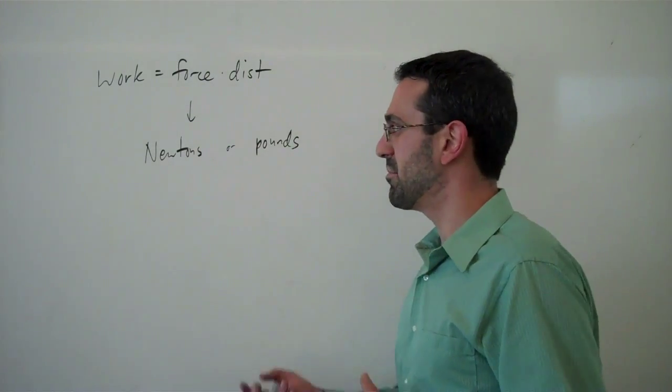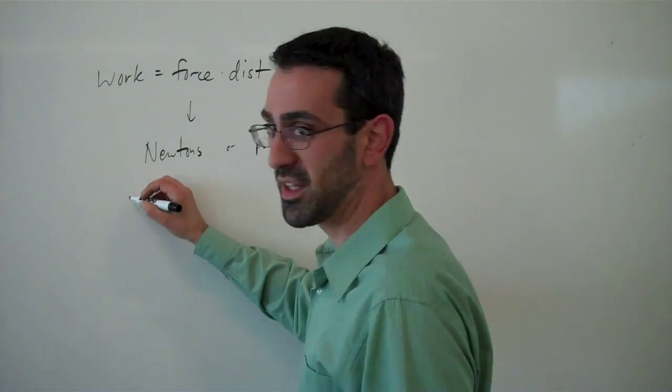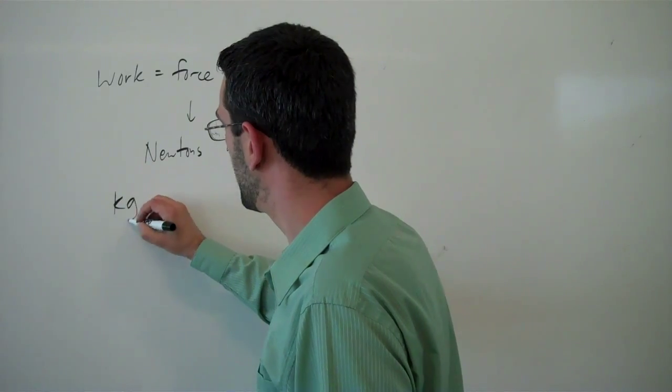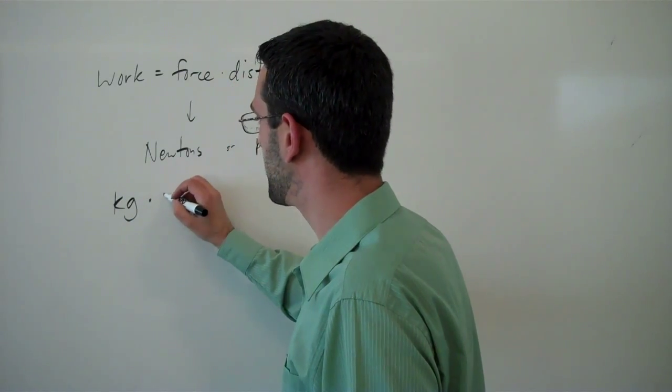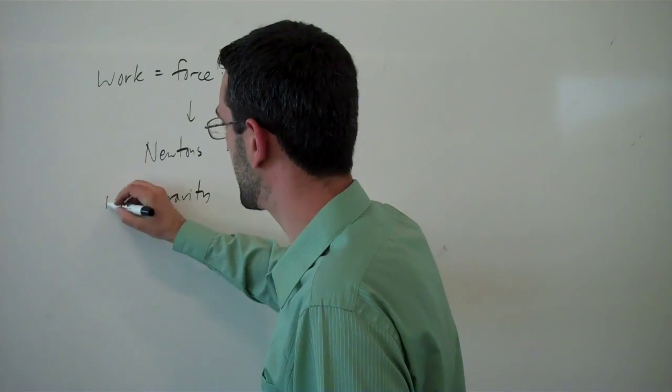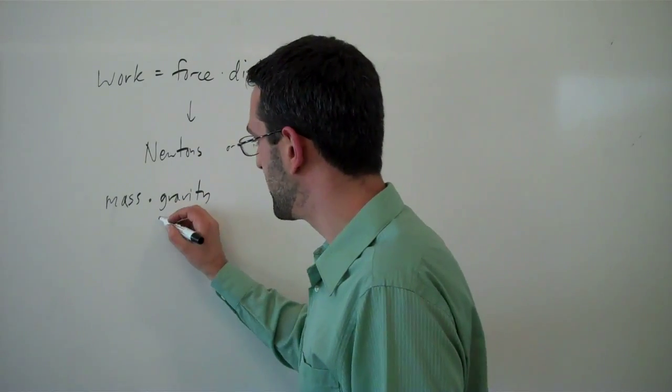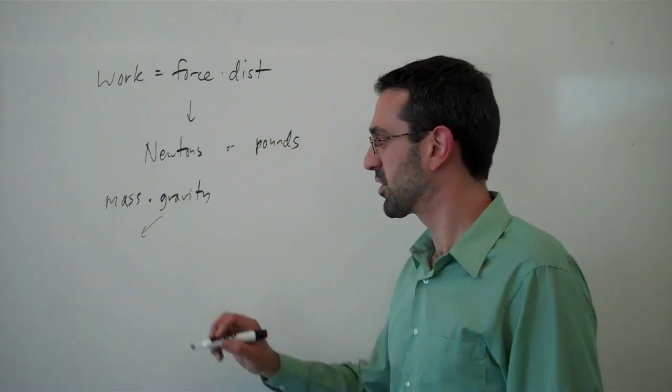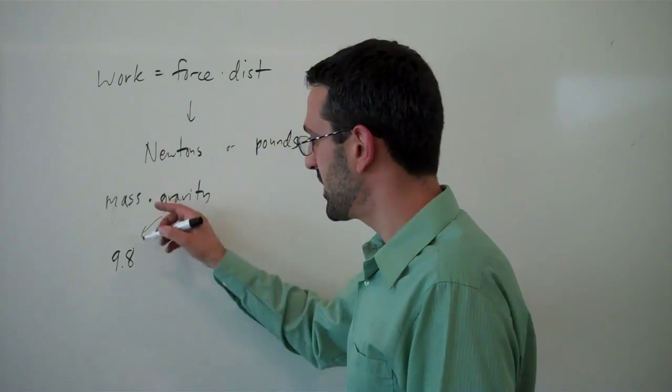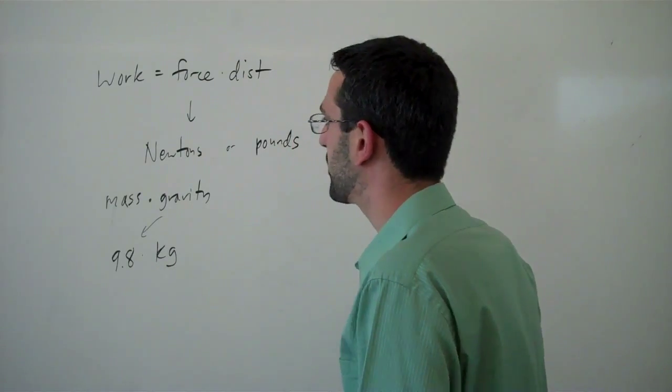If we have something like kilograms, we would need to multiply that by gravity—that would be mass times gravity to get the number of Newtons. The value that we'll typically use for gravity is 9.8 meters per second squared. So we multiply 9.8 times the number of kilograms to find the Newtons of force.